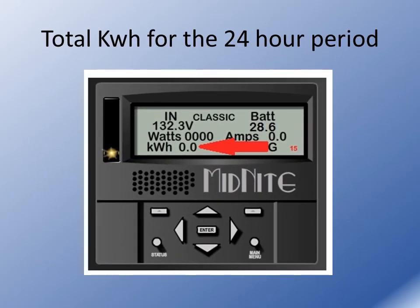Here we're showing kilowatt hours. This is accumulative — watts times time — and this will tell you how many kilowatt hours your Classic has made in a 24-hour period. This does reset every night at midnight and is stored in the logs. The Classic stores 380 days worth of this data, so you can always go back and retrieve it.